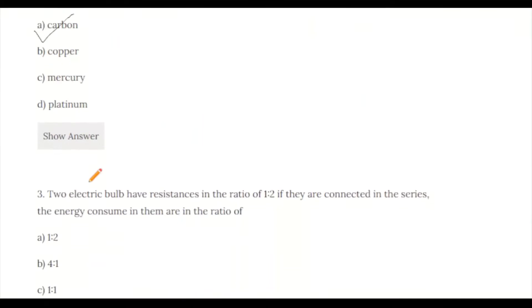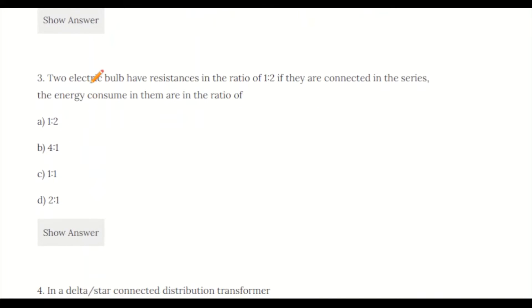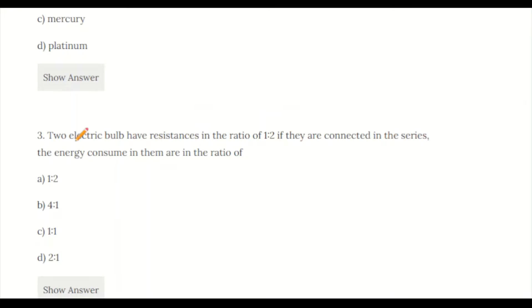Question 3: Two electric bulbs have resistance in the ratio of 1:2. If they are connected in series, the energy consumed in them are in the ratio of: a) 1:2, b) 4:1, c) 1:1, d) 2:1. Energy consumed means power. Using formula P = I²R, and since current is the same in series, the power ratio follows resistance ratio. So the answer is 1:2, option A.